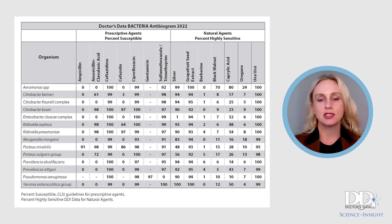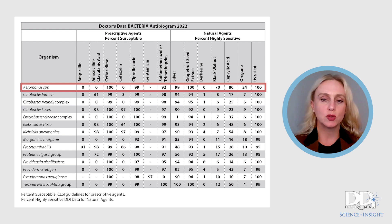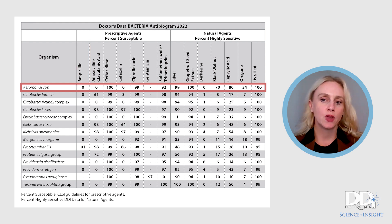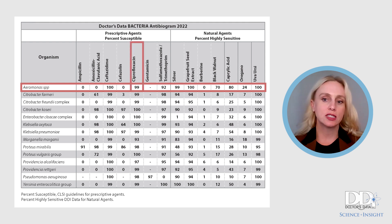The organisms are listed in order, starting with Ereomonas. With regards to Ereomonas and ampicillin, you will see 0% of the samples tested were susceptible, whereas 99% of the samples tested were susceptible to ciprofloxacin.